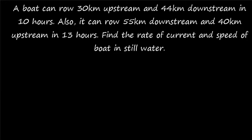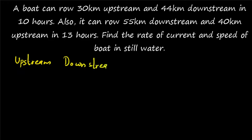Welcome to today's class. Today's question: a boat can row 30 kilometers upstream and 44 kilometers downstream in 10 hours. It can also row 55 kilometers downstream and 40 kilometers upstream in 13 hours. Find the rate of current and the speed of the boat in still water — that is, find X and Y.